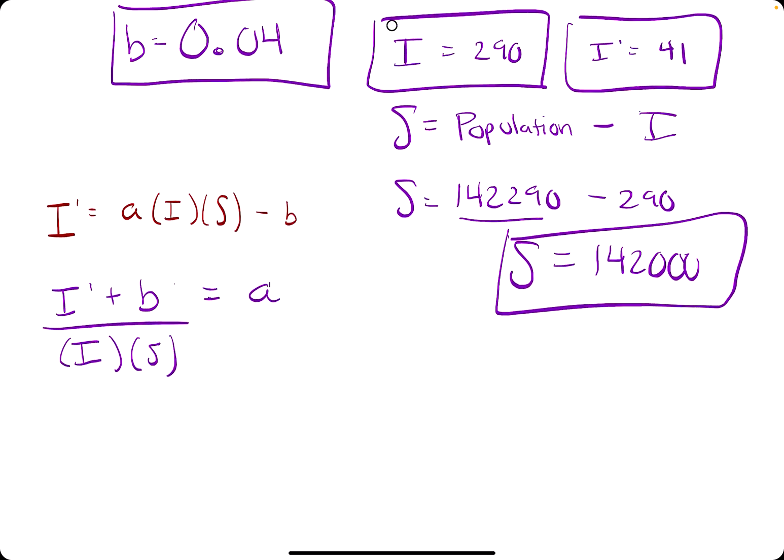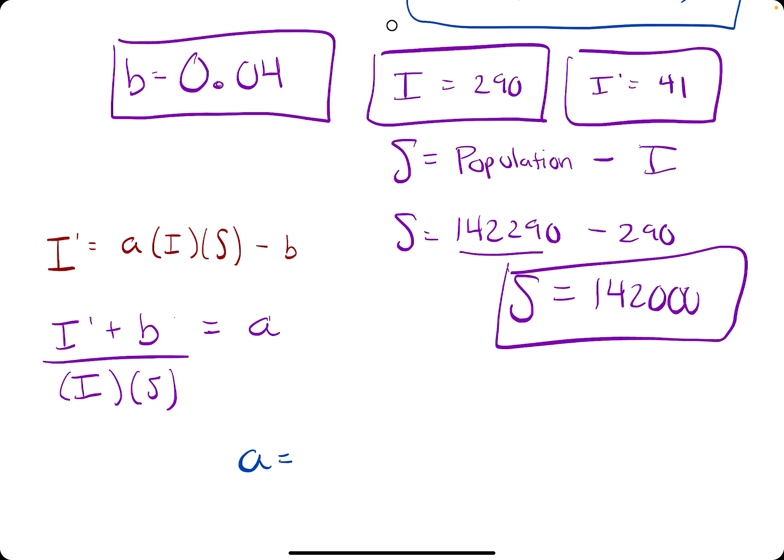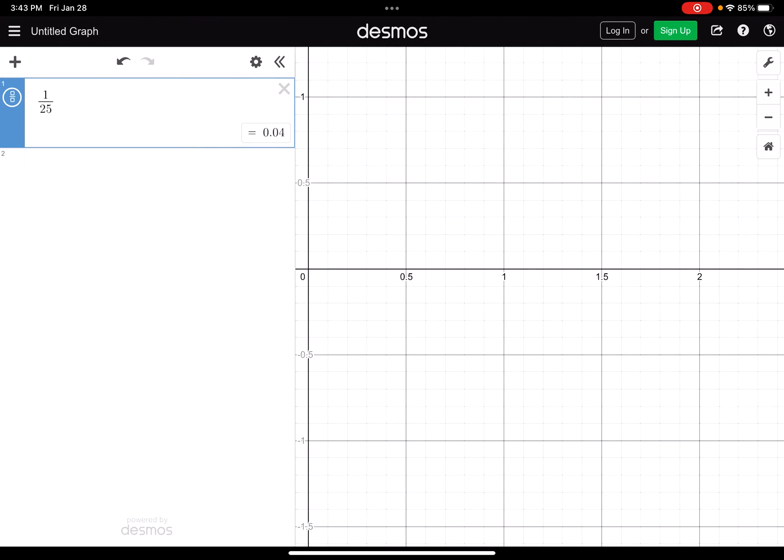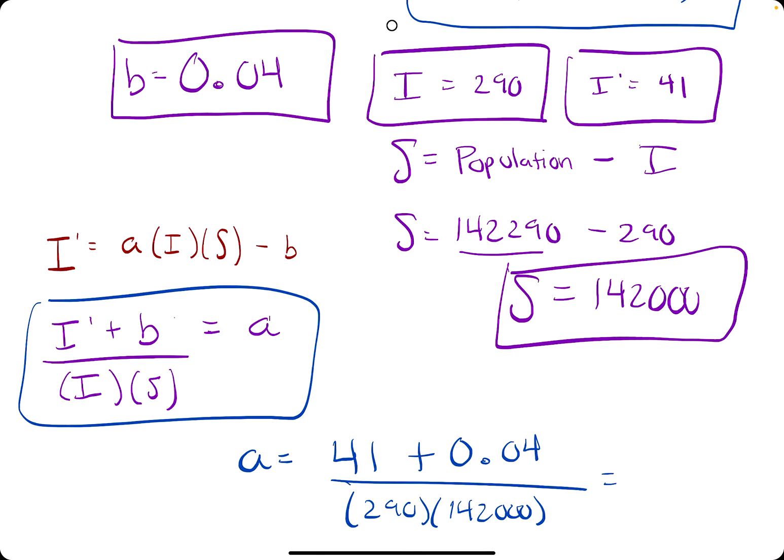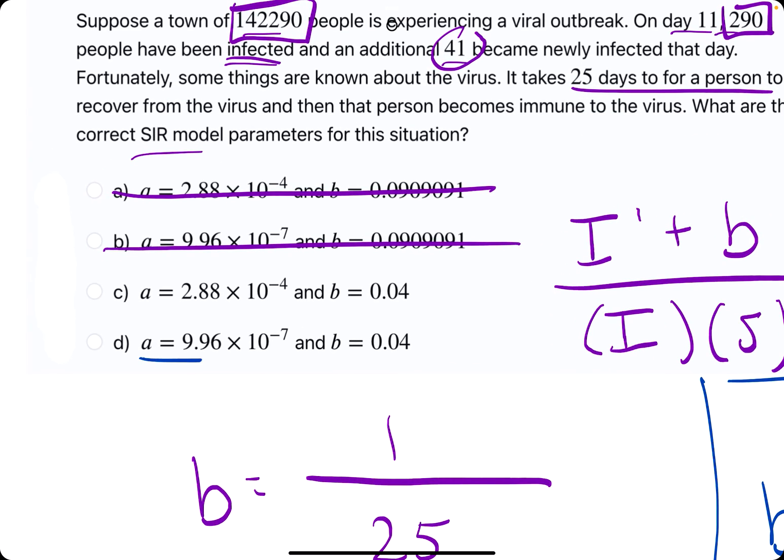Alright, so let's give that a shot, plugging in the values that we've found. For I prime, we have 41, for B, we have 0.04, for I, we have 290, and for S, we have the 142,000. Alright, let's open up Desmos and plug this in. We have 41 plus 0.04, and we are dividing this by 290 times 142,000, and what that gives us is 9.96 or 9.97 times 10 to the negative 7. So basically, 9.9, 10 to the negative 7, anything pretty close to those values, 9.96, 10 to the negative 7 for this one. So it looks like option D is our best answer.